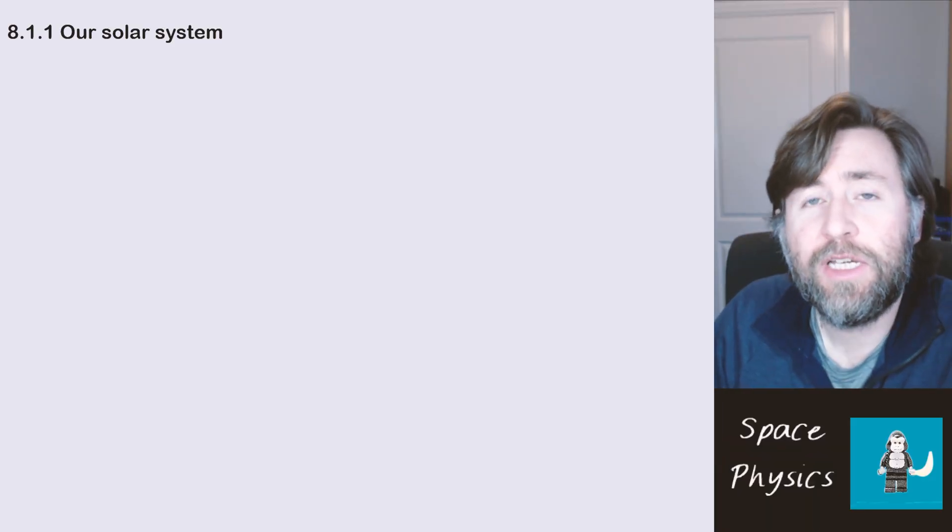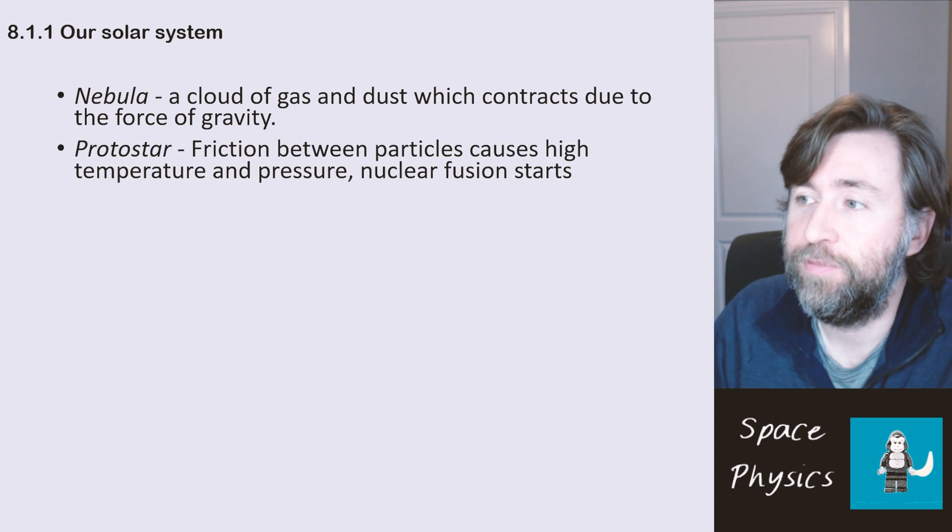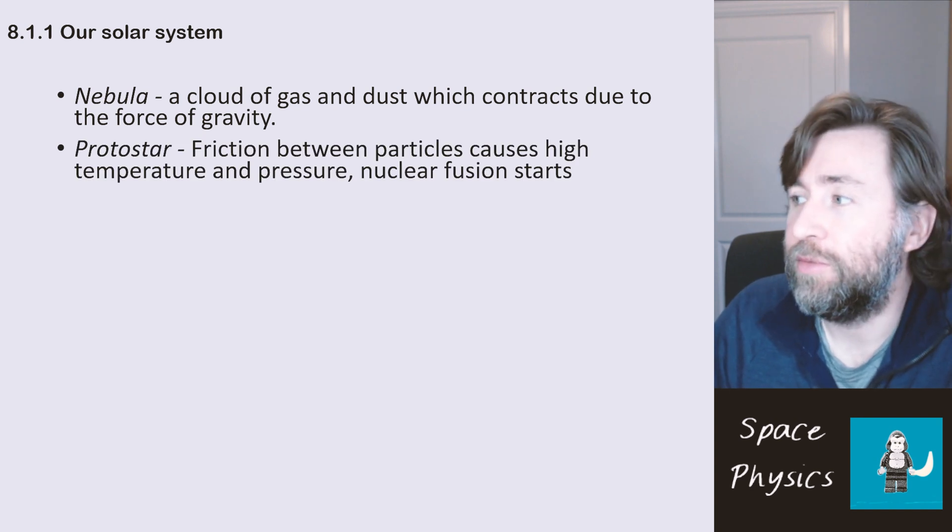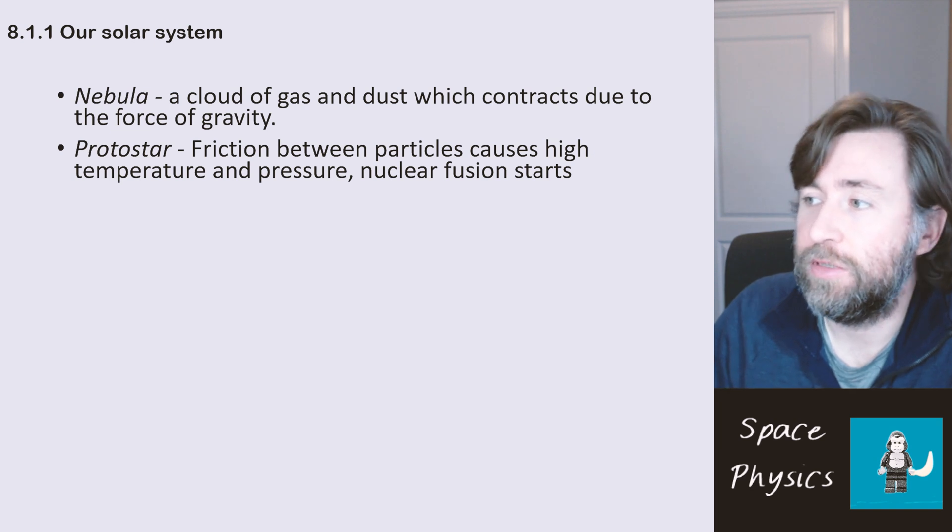So let's define those different stages. A nebula is a cloud of gas and dust which contracts due to gravity. A protostar is where friction between the particles causes high enough temperature and pressure for nuclear fusion to start.